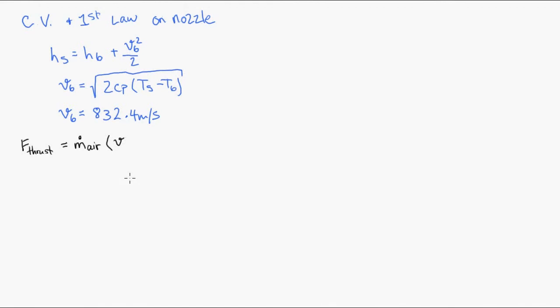To find the thrust we multiply the mass flow rate of air by the change in velocity. And we're given the mass flow rate of air in the problem and we can find the difference in velocity.